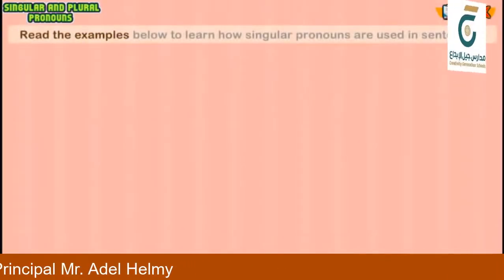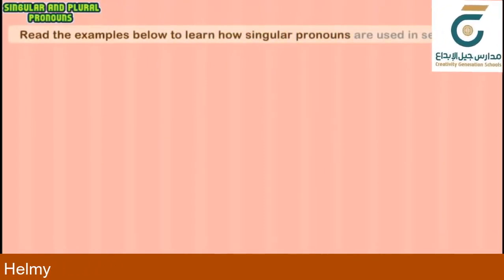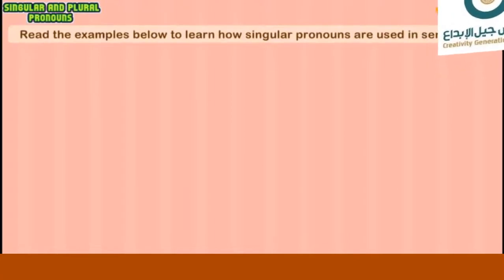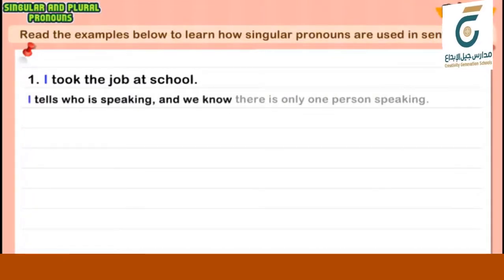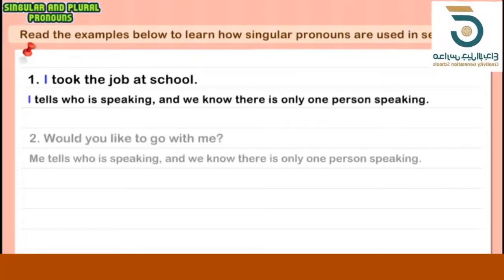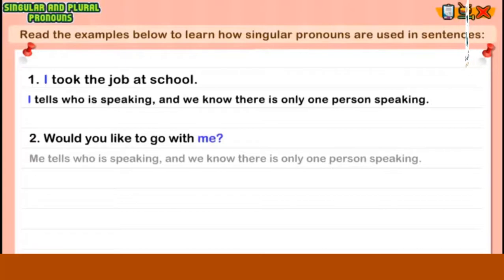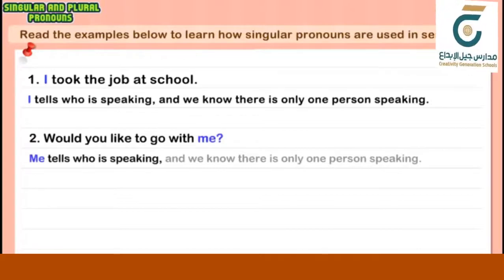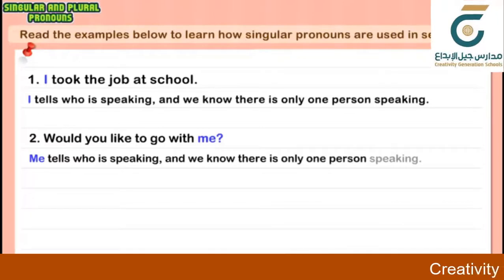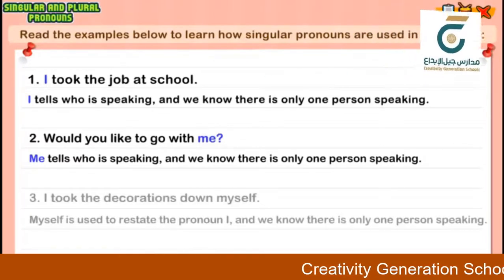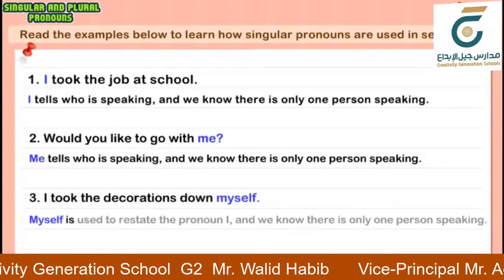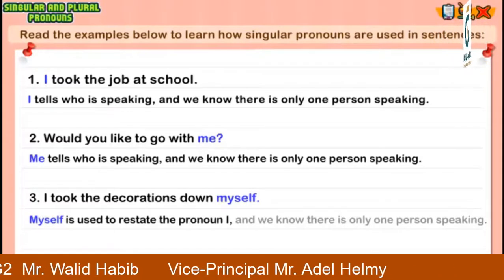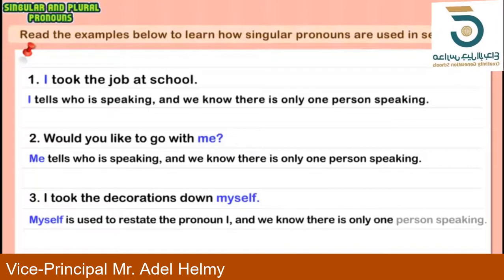Read the examples below to learn how singular pronouns are used in sentences. I took the job at school. I tells who is speaking, and we know there is only one person speaking. Would you like to go with me? Me tells who is speaking, and we know there is only one person speaking. I took the decorations down myself. Myself is used to restate the pronoun I, and we know there is only one person speaking.